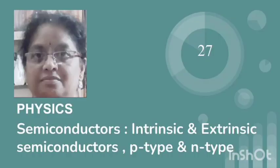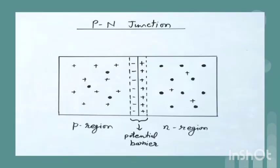Even the extrinsic semiconductors in these individual forms are not very useful. It is made useful in the form of a P-N junction. P-N junction is an arrangement in which P-type semiconductor is brought into close contact with N-type semiconductor. This is called a P-N junction diode. To make a P-N junction diode, half portion of a semiconductor is covered and then heated to a high temperature in the atmosphere of atoms of a group 3 element like aluminium, which diffuses into the exposed portion and hence half of it becomes P-type.